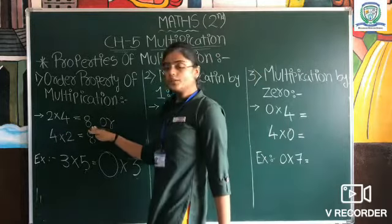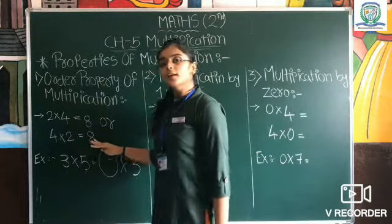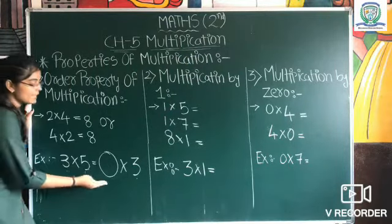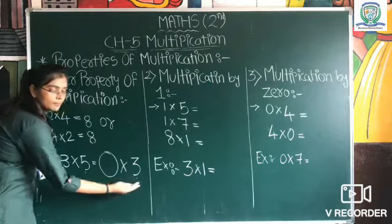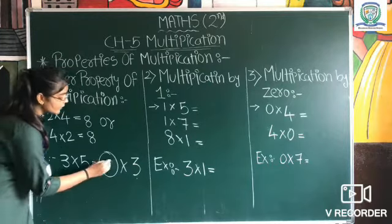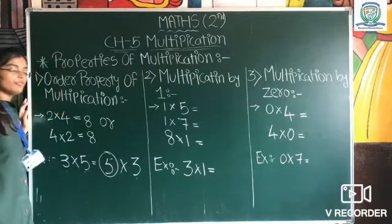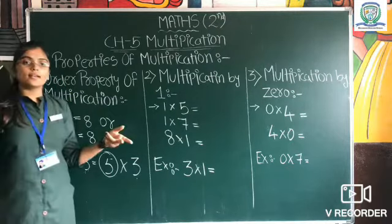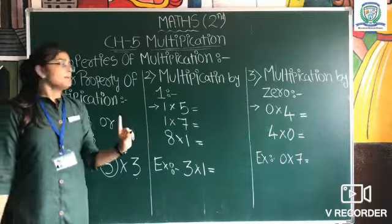2 into 4 gives 8, and 4 into 2 also gives 8. For example, 3 into 5 equals blank into 3. Whether you write 3 into 5 or 5 into 3, the answer will be the same. Changing the order of numbers doesn't change the answer.